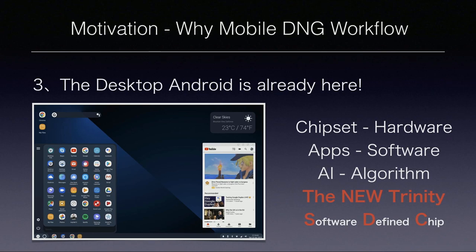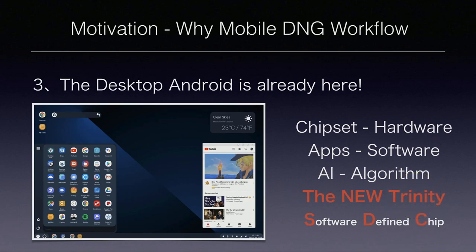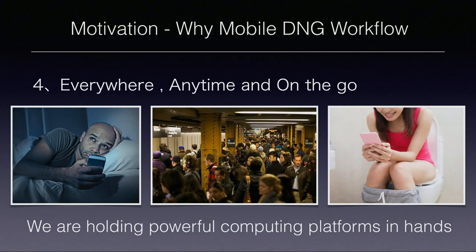In the future, we'll even have software-defined chips — custom designed chips in cell phones that run only deep learning and other difficult tasks. So the new trinity involves a lot — we have a very powerful computational platform in our hands. Whether I'm commuting, waiting for the tram, or sitting anywhere, I want to make post-production and achieve high quality images. We are holding the powerful computational platform everywhere, anytime on the go.